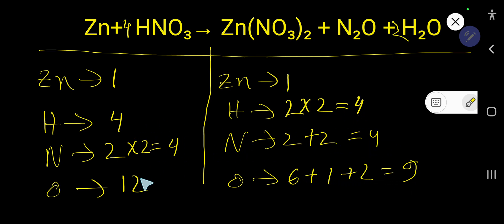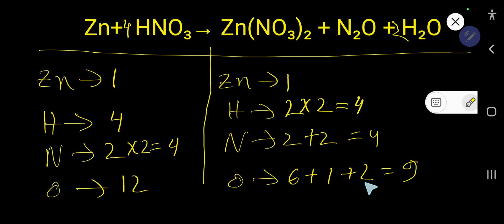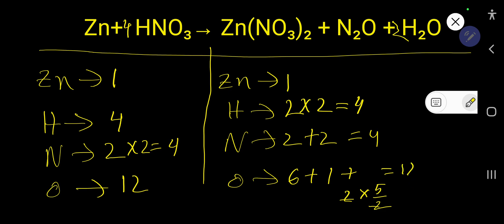So look — we have 4 nitrogen on both sides, 4 hydrogen on both sides, but 12 oxygen on the left and only 9 on the right. We need to increase by 3 oxygen. To make 12 oxygen, we have 2 from water. So I need to multiply H₂O by something that will give 5 oxygen from water. So 5 over 2: 2 times 5/2 cancels, giving 5. So 6 plus 1 plus 5 equals 12. The coefficient 5/2 must come before H₂O.